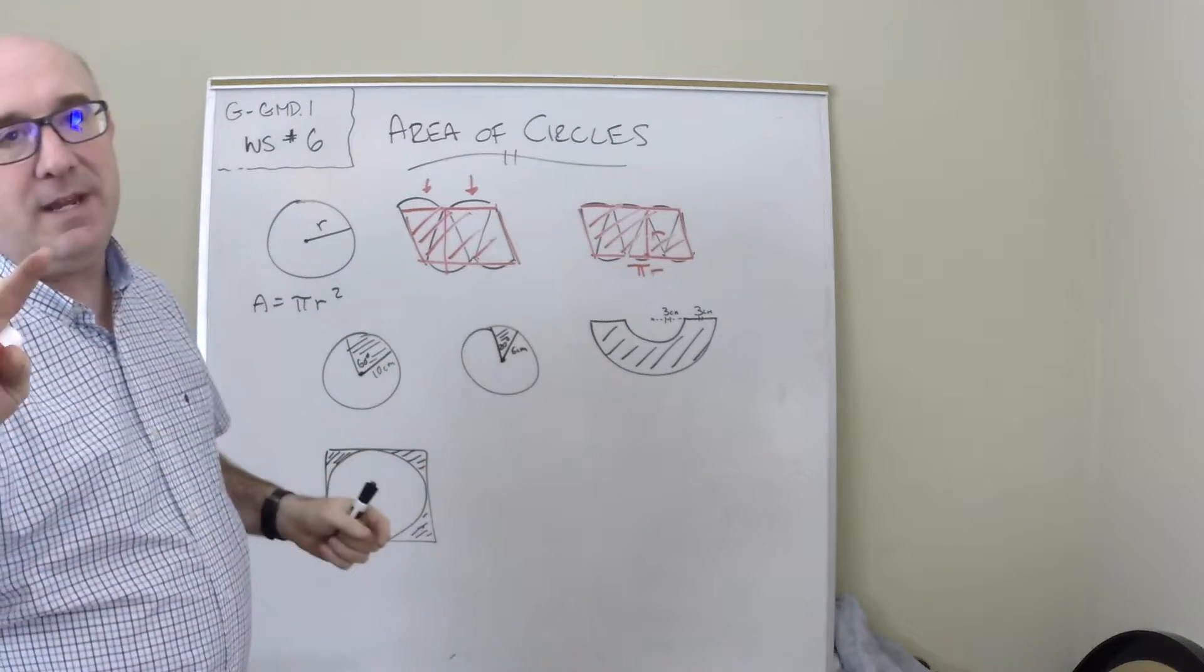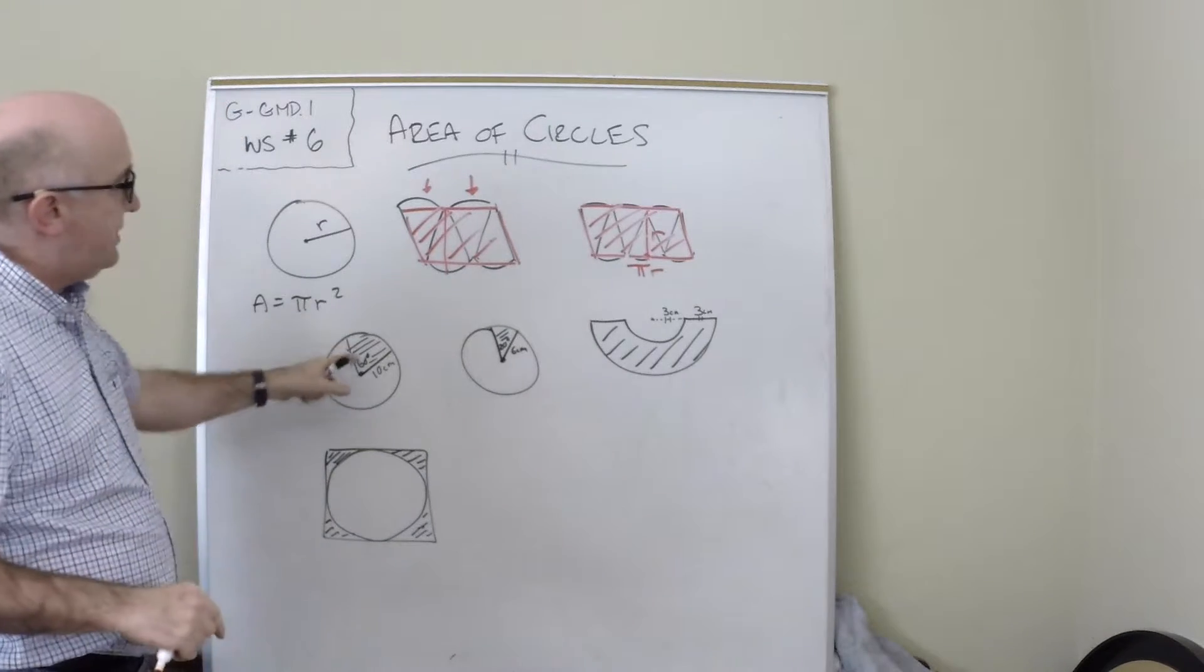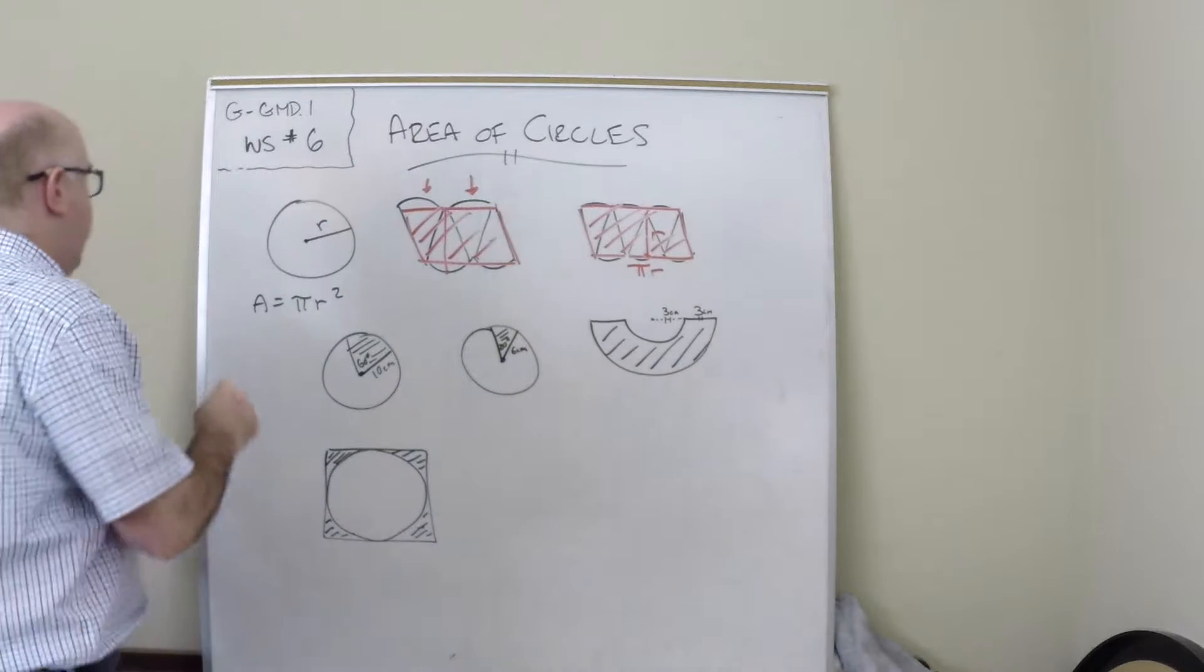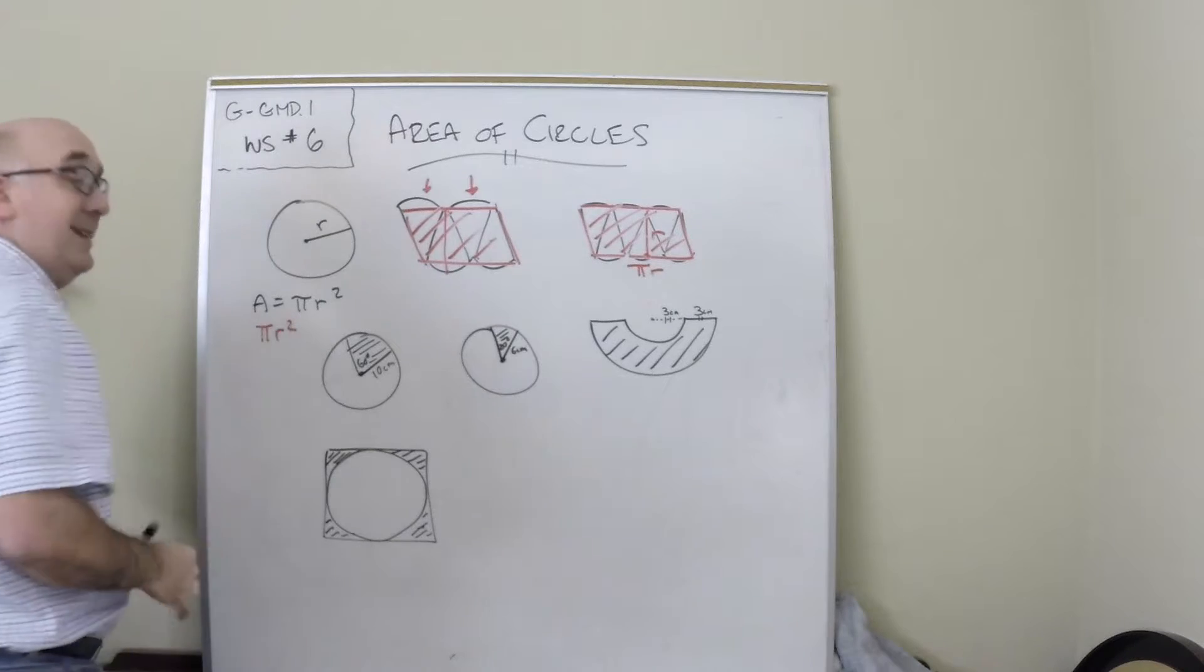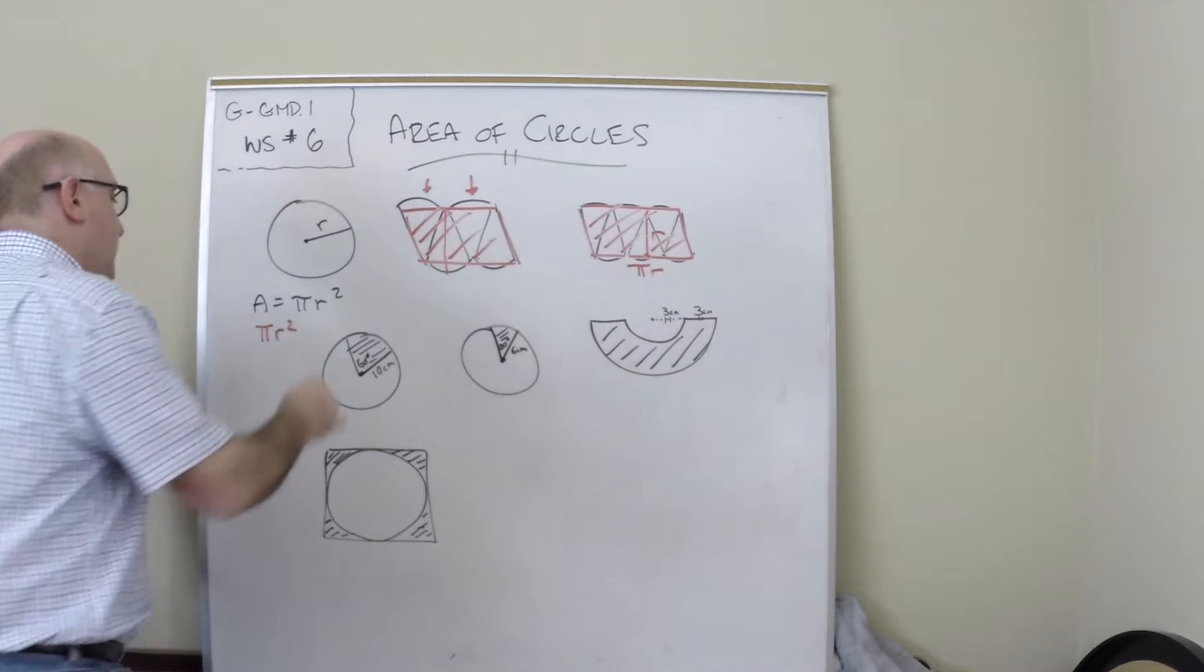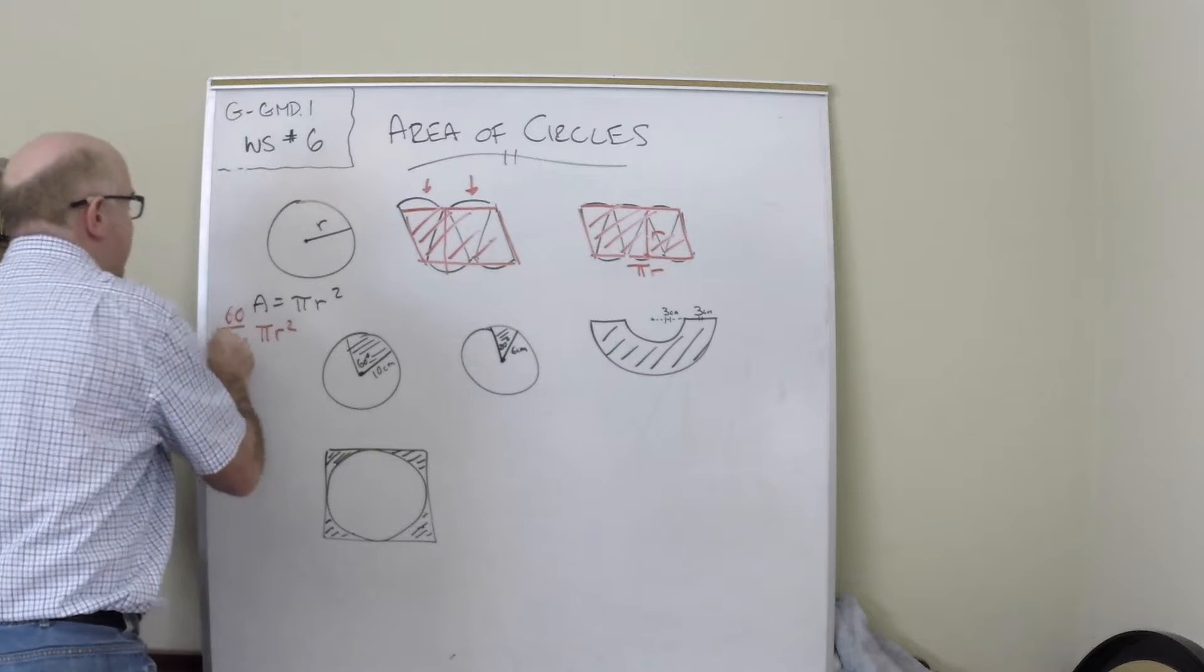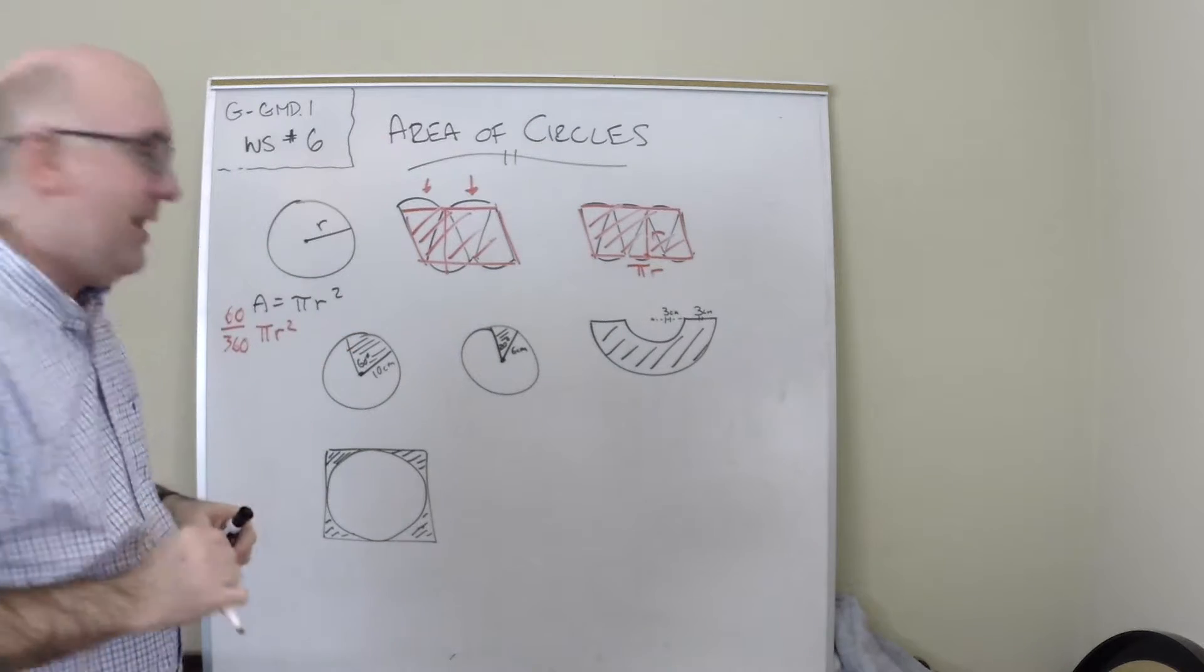Now, finding the area of an entire circle—easy. Finding sectors—a little bit more interesting. So here's a sector that takes up 60 degrees. Think about it this way: think about it as pi r squared would be the entire region, but we only have 60 out of the 360 degrees.